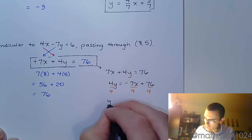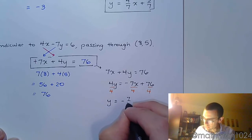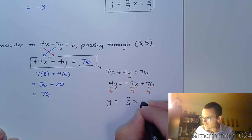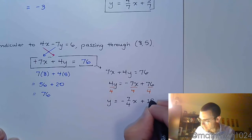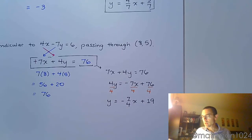So we have y is equal to negative 7 fourths x plus 19. All right, so that's your answer in slope-intercept form. But there's something else I want you to see.